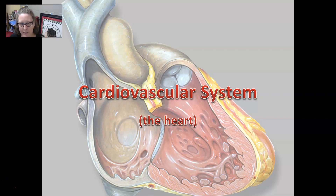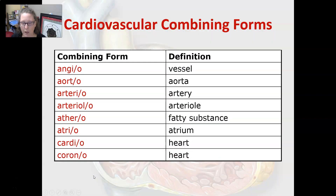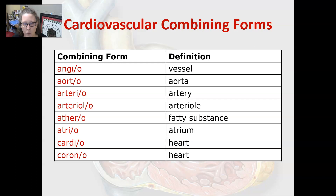Hi everybody, this is Dr. A. In this medical terminology video over the cardiovascular system, we're going to go over the word parts. Let's start with the combining forms: angio means vessel, aorta means aorta, arterio means artery, and arteriolo and arterio are also artery-related combining forms.